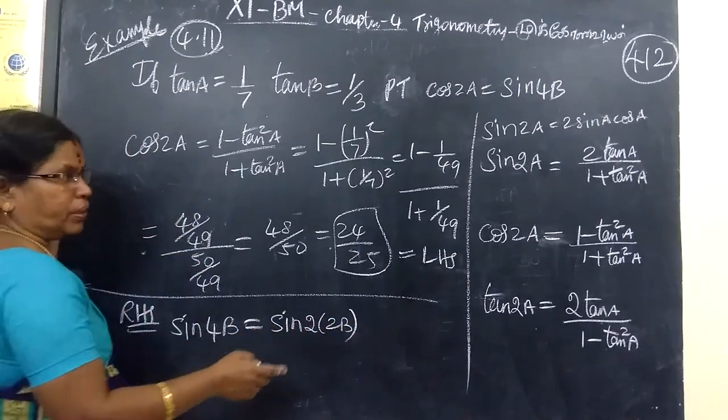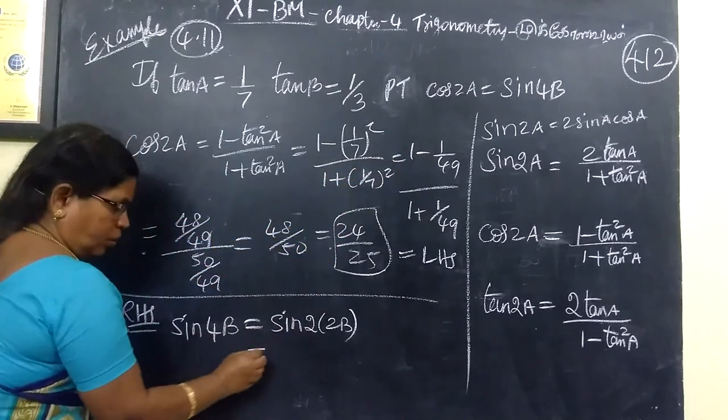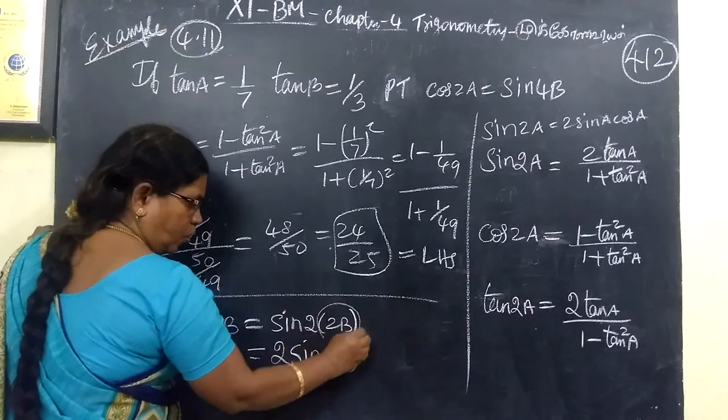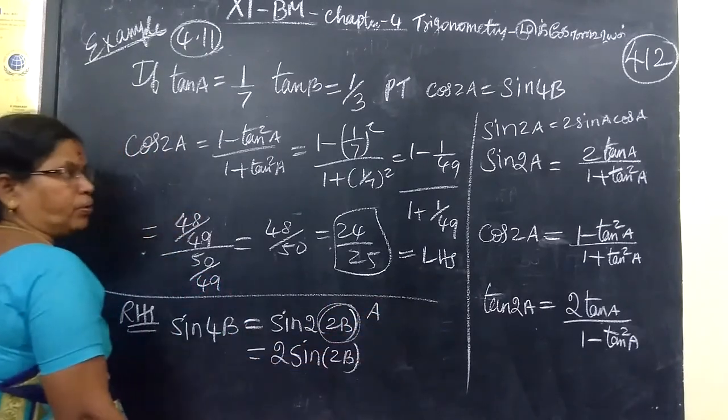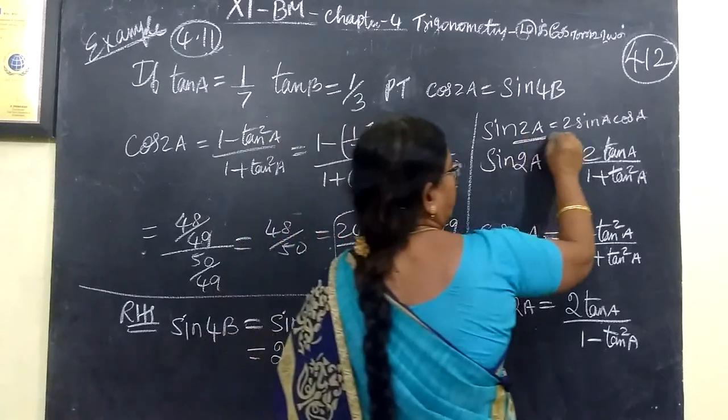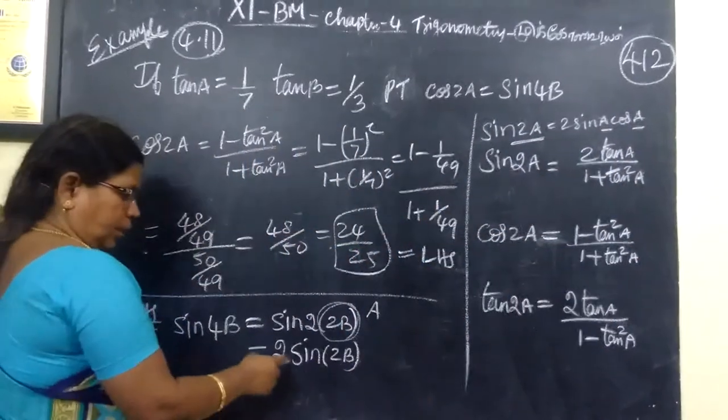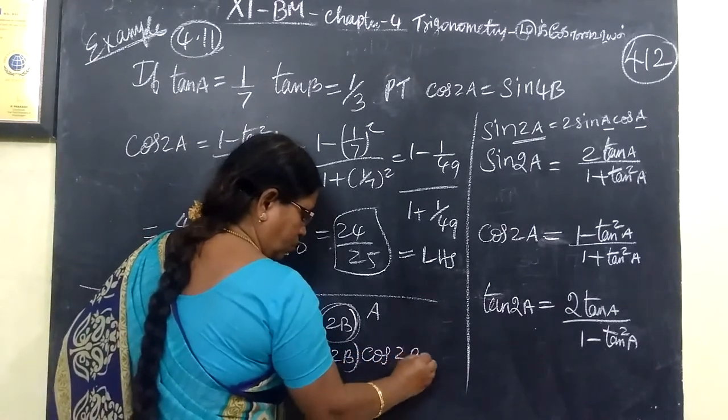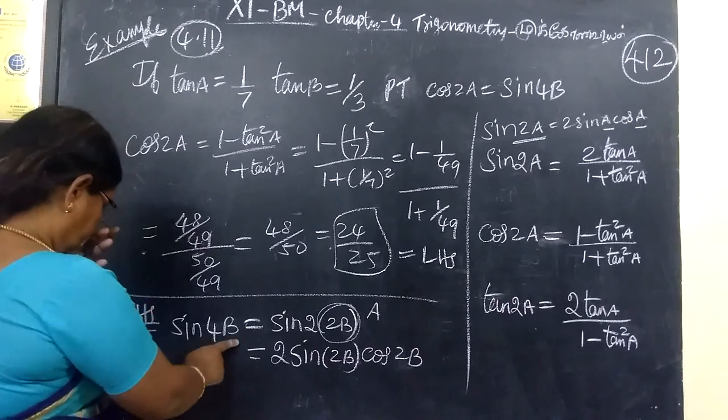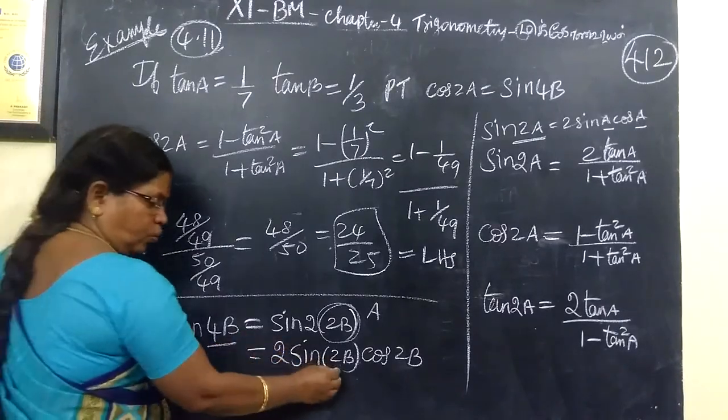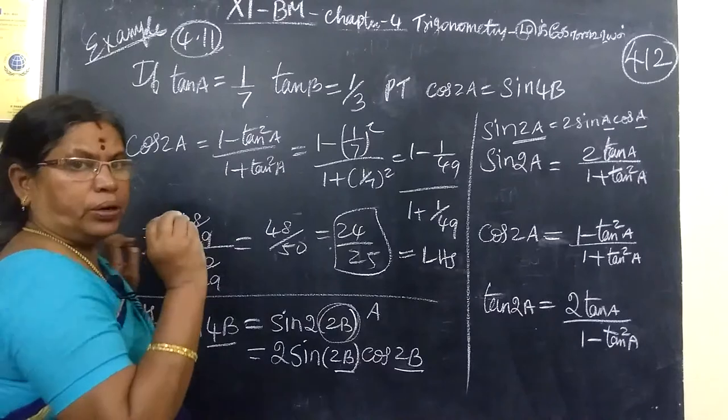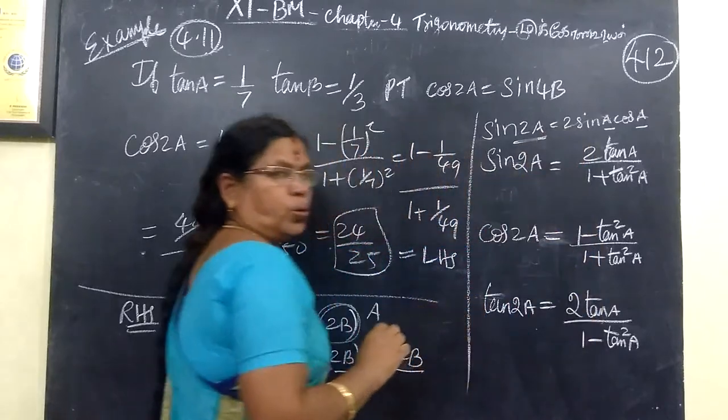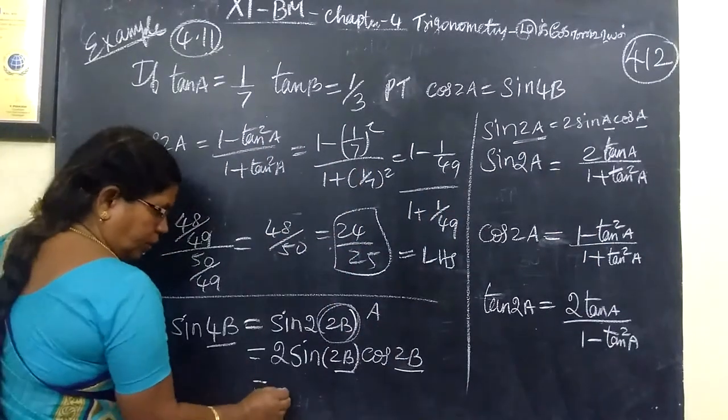Now, it resembles sin 2a formula. Sin 2a means 2 sin a cos a. So, here 2 sin 2b, you are writing 2b. Here 2a means a, a. That means 4b becomes 2b, 2b. So, 2 sin 2b, then cos 2b. That's 4b: 2b, 2b.